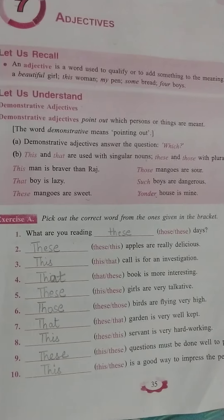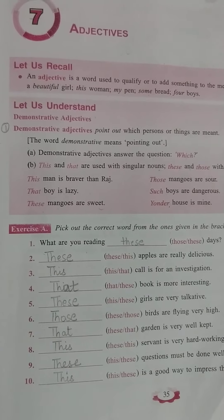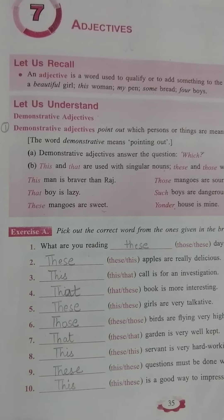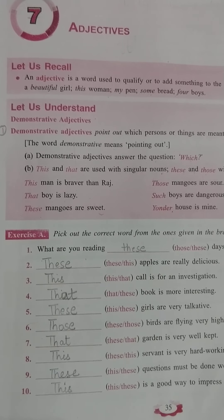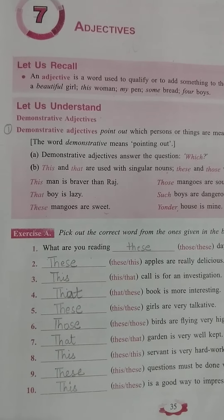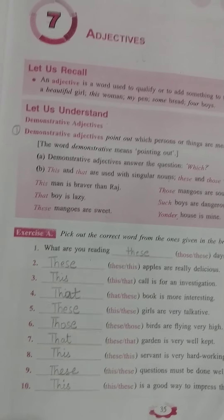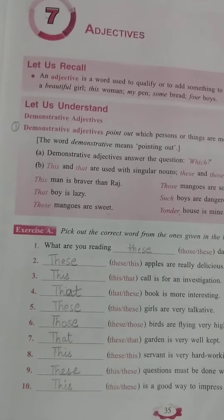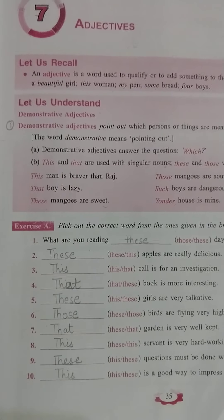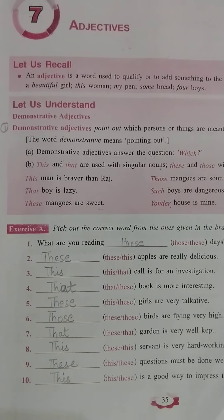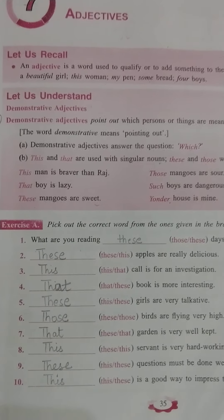Now first, come to the definition of adjective. An adjective is a word used to qualify or to add something to the meaning of a noun. For example, 'a beautiful girl.' Here, girl is noun and beautiful is adjective, as it is saying something more about the girl — telling us how the girl is. The girl is beautiful.